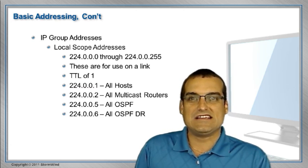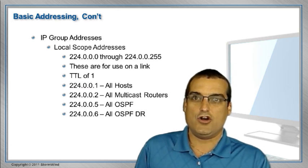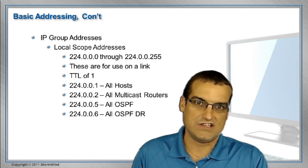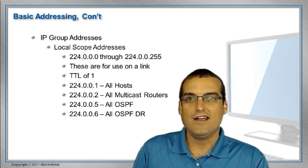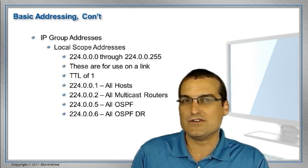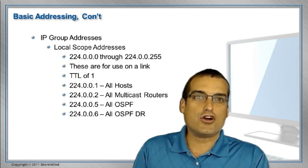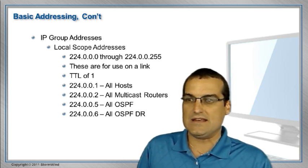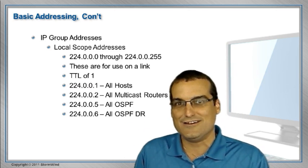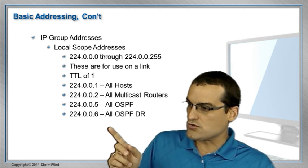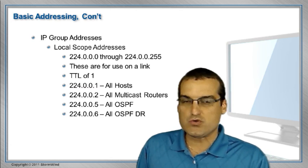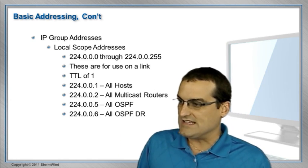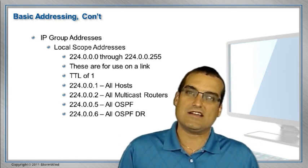We have some very famous examples of these. 224.0.0.1 indicates all hosts on the link. 224.0.0.2 is utilized for multicast routers, and we'll be doing videos on multicast routing here at the CLN. Notice 224.0.0.5 is for all OSPF devices. When we're on a broadcast or non-broadcast multi-access segment and need to send something just to the Designated Router, we address the multicast transmission to 224.0.0.6. Those designated routers subscribe to that traffic by utilizing the 224.0.0.6 address on their network card.